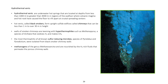Hydrothermal vents are underwater hot springs located at depths from less than 1,000 meters to greater than 4,000 meters in regions of the sea floor where volcanic magma and hot rock have caused the floor to rift at crustal spreading centers. Hot vents called black smokers form upright sulfide edifices called chimneys that can be less than 1 meter to over 30 meters in height. Walls of smoker chimneys are teeming with hyperthermophiles such as Methanopyrus, a species of archaea that oxidizes hydrogen and makes methane. The most thermophilic of all known sulfur-reducing microbes — species of Pyrolobus and Pyrodictium — were isolated from black smoker chimney walls. Methanogens of the genus Methanosarcina are nourished by the hydrogen-rich fluids that permeate the porous chimney walls.